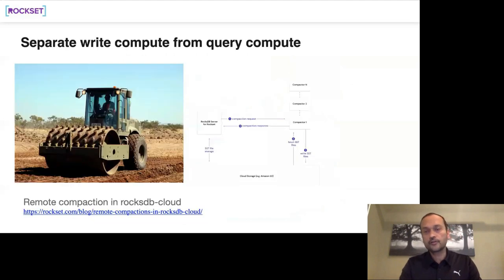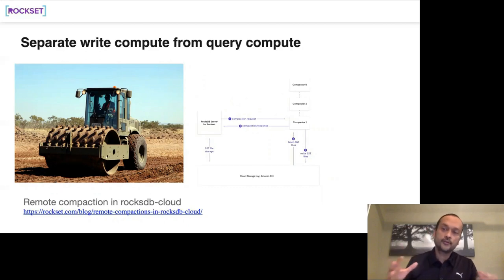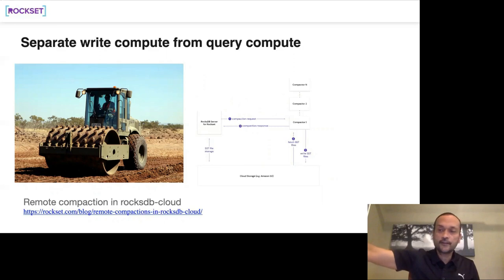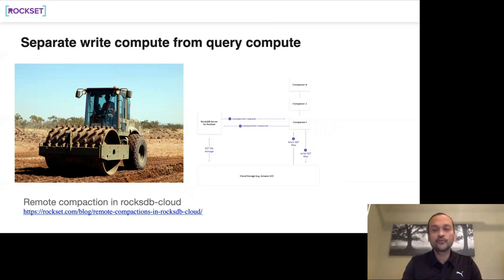We recently shipped something called remote compaction. LSM compaction is a well-known tuning problem — normally compaction runs on the RocksDB node itself. We implemented remote compaction to further separate compute from storage. The leaf server writes new SST files and when it's time to compact, it makes an RPC call to a compaction tier: 'compact these three S3 files and give me the results.' Because everything is against shared storage, we can dissociate compaction compute from the leaf node, with more detail in our blog post.